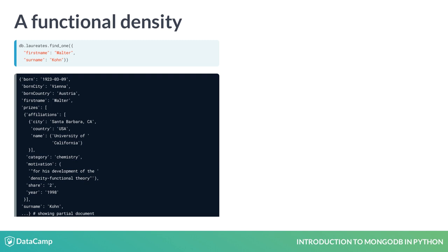Note also that a laureate may have many affiliations for a prize. The affiliations field of each prize sub-document is an array. To fit text on this slide, I use parentheses to form multi-line strings and I show only part of the document.